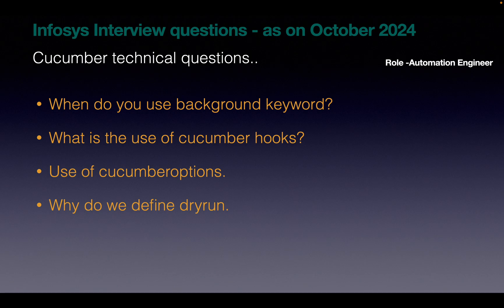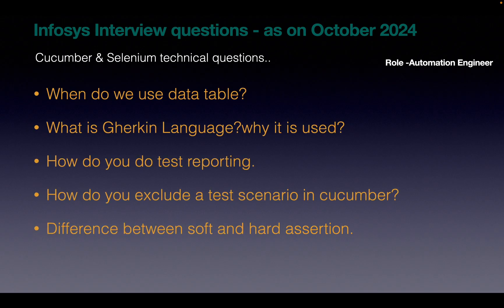The next question is related to dry run: why do we define dry run in Cucumber? Dry run checks whether all the steps defined in feature files have corresponding step definitions mapped to them, before the test begins. The next question: when do you use a data table? To maintain a large number of input parameters, we go for data table in Cucumber. What is Gherkin language? Gherkin is used to create Cucumber tests in plain English — someone who does not have programming knowledge can also read and understand what automation testing we are going to do.